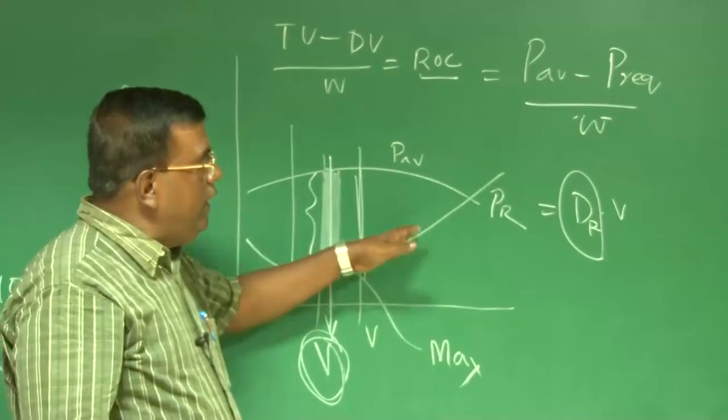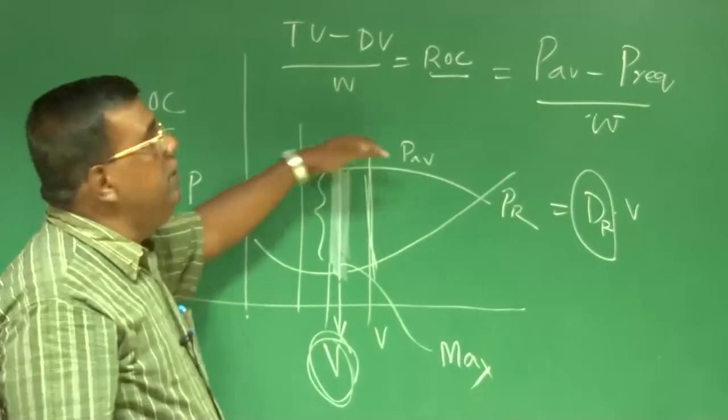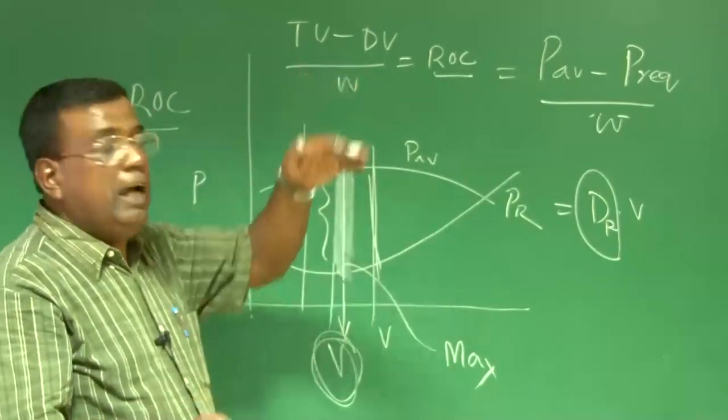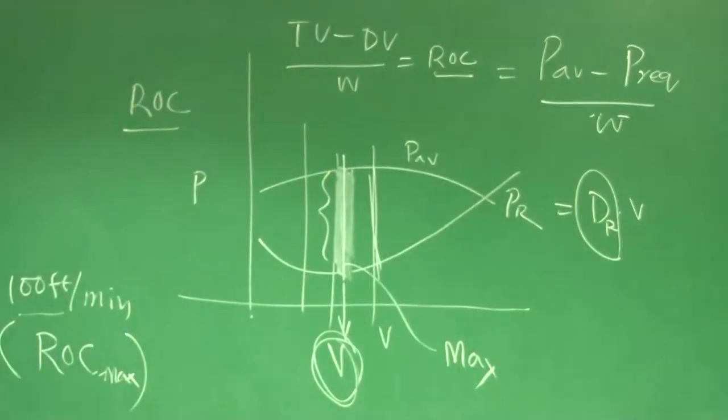One is, I ensure that power required at every speed is relatively less, and power available is relatively more. Then, I have a wider gap. So, I am focusing on power required. If I want to see that power required is less, that means that drag required for a given speed should be less.